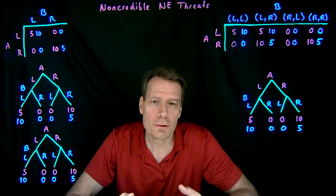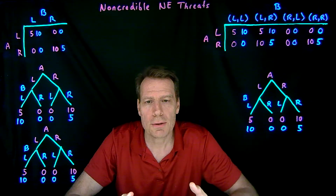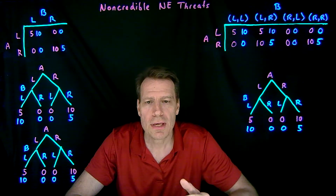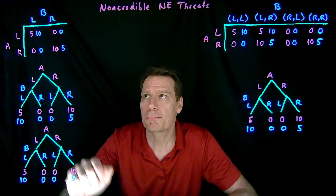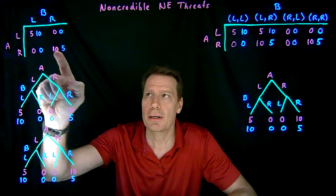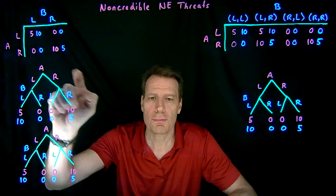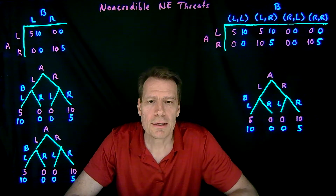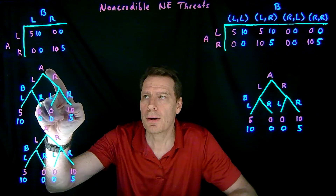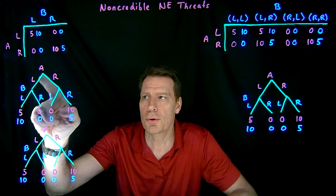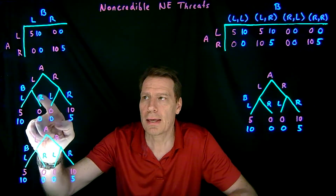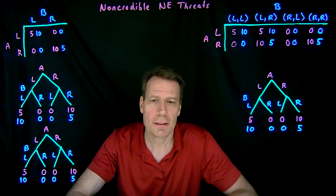Looking for pure strategy Nash equilibria in this simultaneous move game, we find the same two equilibria as before: both drivers on the left, and both drivers on the right. But let's focus on the sequential form of the game, where the American moves first — going left or right — and then the British player chooses after observing what the American did.